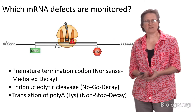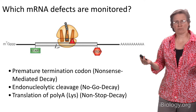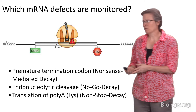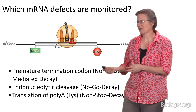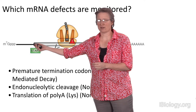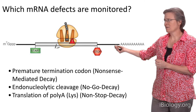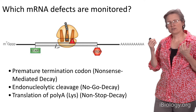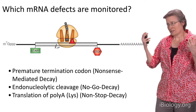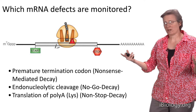Which messenger RNA defects in the cell might you like to monitor? What could be the problem with a given messenger RNA in a eukaryotic cell? As we remember from learning about mRNA processing, eukaryotic messenger RNAs come out of the nucleus with a cap at their 5' end and with a poly-A tail at their 3' end, and these are key signatures that tell a ribosome this is a good message and should be translated.